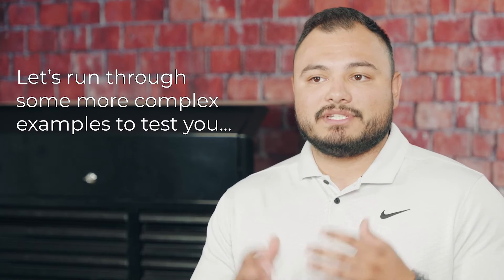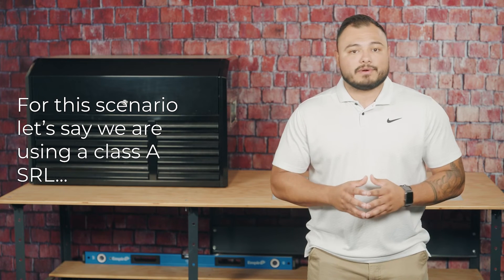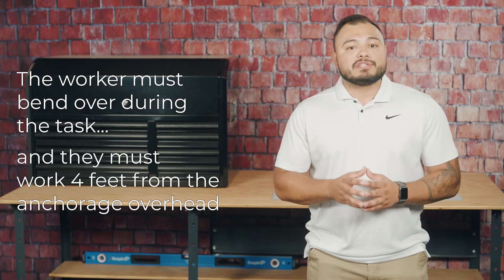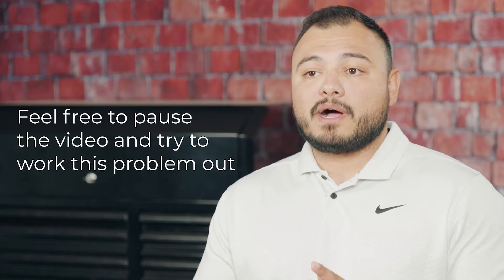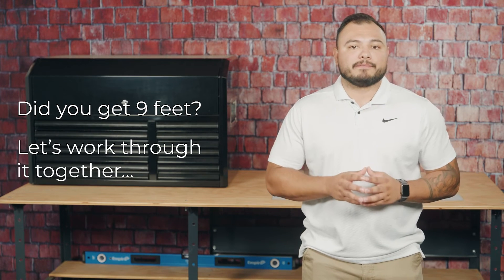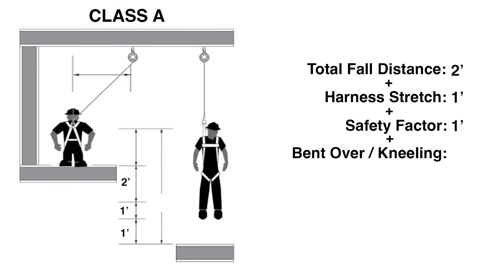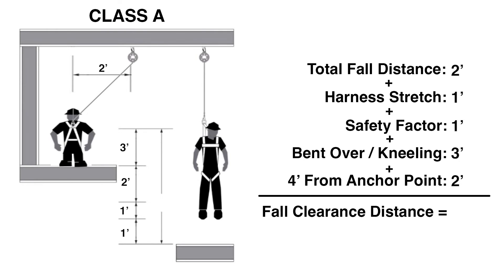Let's run through a more complex example. We're using a Class A SRL. The worker must bend over during the task and must work four feet from the overhead anchorage. We start with the total fall distance for a Class A SRL, which is two feet. Then add one foot for harness stretch and one foot for safety factor. We must also add three feet because the worker is bent over, and add another two feet since the worker will be four feet from the anchorage. Once we add all that up, we see that we must have a fall clearance distance of nine feet from the working surface to the next lower level or ground to use this system.